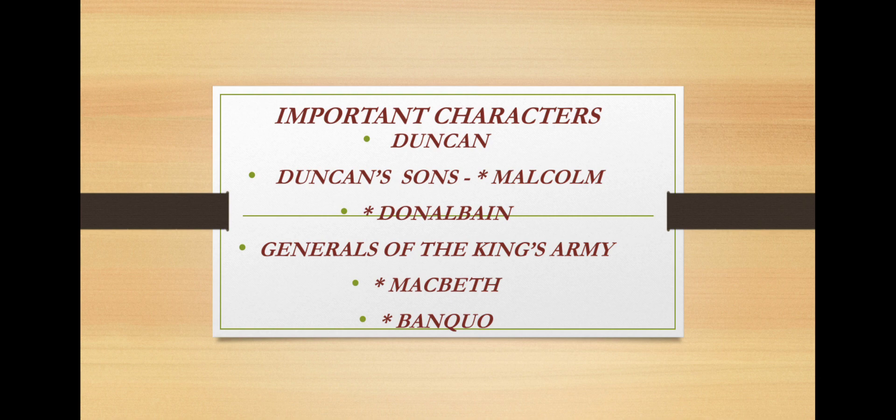The next characters we have are Macbeth and Banquo. They are the generals of the king's army. The whole play deals with Macbeth, his downfall, and ultimately his death because of his vaulting ambition and wrong decisions.